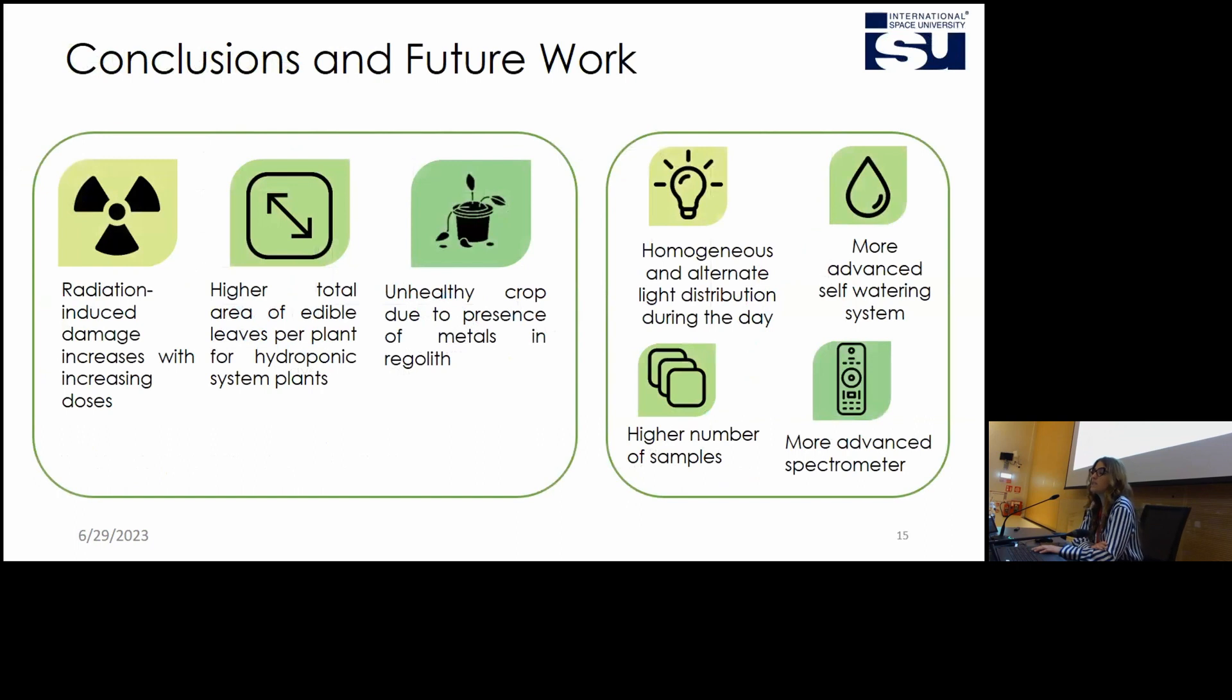We can say that the radiation induced damage increases with the increasing of the dose. And also a very important and interesting result is that the total area of edible leaves that we can give to the astronauts is better performing for the hydroponic system. And also the healthiness of the plants is better in the case of the hydroponic system due to the probable contamination of metals for the regolith plants.